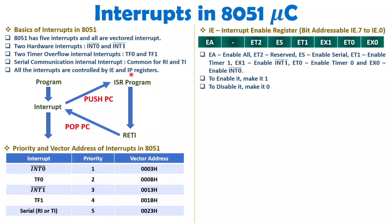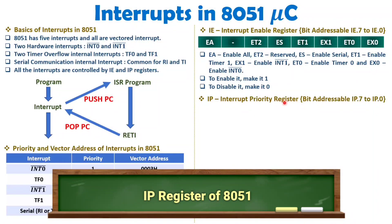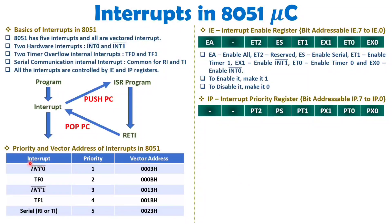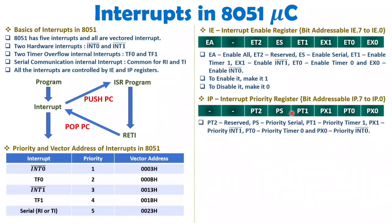To control priority we have the IP register — the Interrupt Priority register — which is also bit addressable, addressed from IP7 to IP0. The sequence follows the same interrupt order: PX0 for INT0, PT0 for TF0, PX1 for INT1, PT1 for TF1, PS for serial, and the remaining bits are reserved. Setting a bit to 1 gives that interrupt higher priority; keeping it at 0 maintains the default priority.